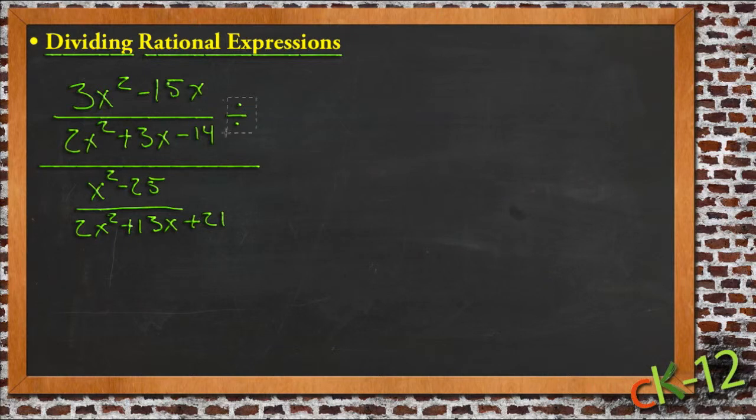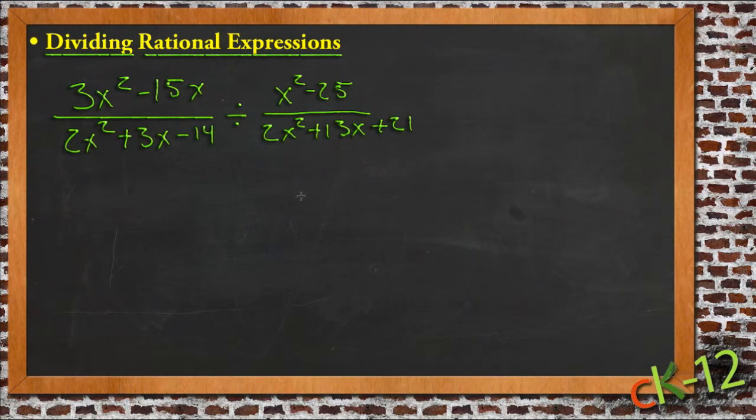Instead of having the division symbol here, the problem would be written this way, where you have this whole big fraction, and then that's written over another one. And I always recommend whenever you have a fraction over a fraction, the first thing you do is go back and write it linearly the way that this one was given to us here, because it makes it a whole lot easier to straighten out and invert so that you can do the actual multiplication.